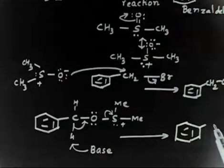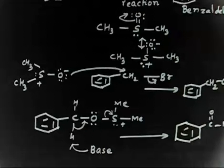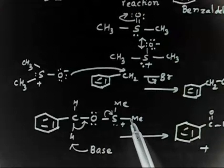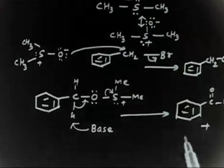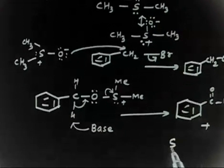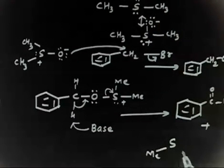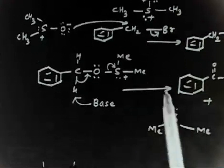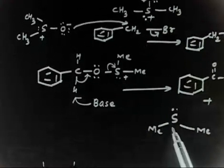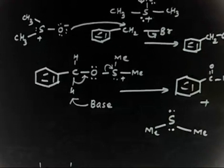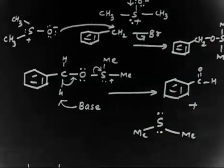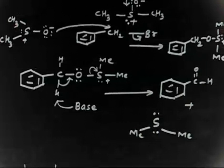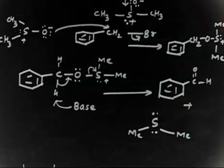So you will get benzaldehyde as the main product, plus the side product dimethyl sulfide (CH3-S-CH3, also written Me-S-Me), which now carries two lone pairs and no formal charge. So benzaldehyde is the main product and dimethyl sulfide is the side product. Let us copy this and then move on to the next problem.